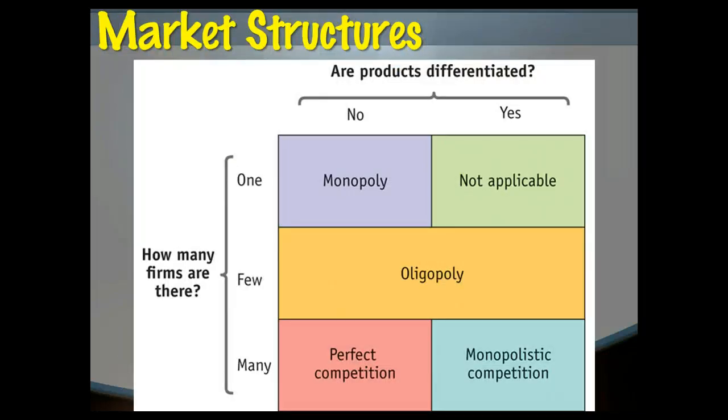And if we put them all in a matrix, what we find is that when there is only one producer, then by definition the products are not differentiated. They are the same. We have what's called a monopoly. If you have a few firms, not many but more than one, then we have what's called an oligopoly, and it doesn't matter whether your products are the same or differentiated. It's still what we call an oligopoly.